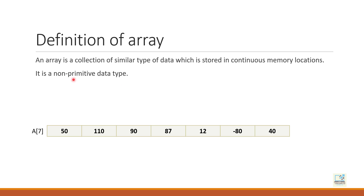Going back to the definition — an array is a collection, meaning it has one or more elements together. As you can see this example I am showing, this is a typical array. There are multiple boxes, and each box can store one value. Right now we have seven boxes, so this array A can store seven values. Array is a collection because it can store one or more values.